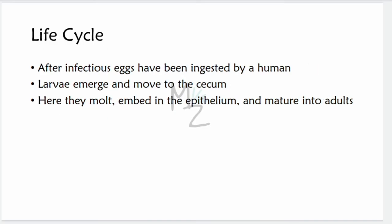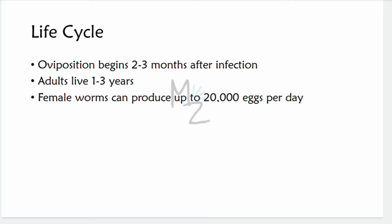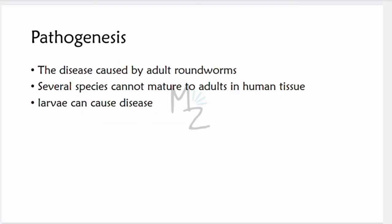In the life cycle, after infectious eggs are ingested by humans, larvae emerge and move to the cecum. There they molt — shedding their outer layer and synthesizing a new one — embedding in the intestinal epithelium and maturing into adults. Oviposition (the egg-laying process) begins two to three months after infection. Adults live for one to three years, and female worms can produce up to 20,000 eggs per day.